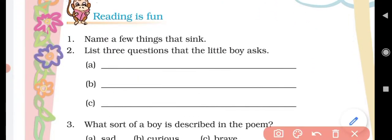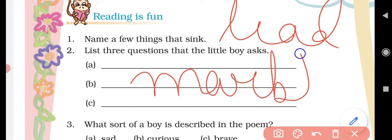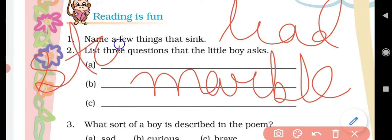Reading is fun. First question: Name a few things that sink. So lead, marble, and stone. Stone also sinks in water.